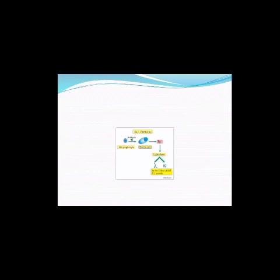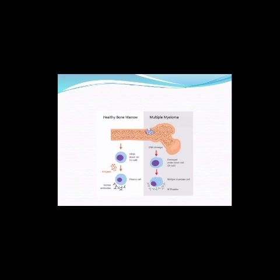When WBC cells, particularly B-lymphocytes, encounter an antigen, plasma cells produce immunoglobulins — antibodies. The antibody has light chains consisting of both kappa and lambda parts, but only one type will be excreted in the urine — that is called the BJ protein. In healthy bone marrow, when antigens are present, white blood cells are converted into plasma cells and produce antibodies that cleave the antigens.